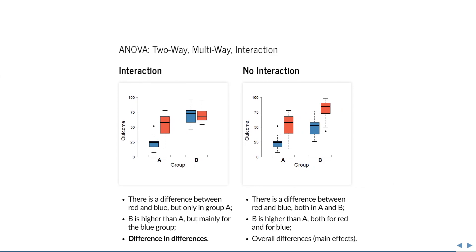Here is a visual representation of what it means for there to be an interaction. On the left, there is a clear difference between the red and blue group for those in category A, but not for those in category B — in other words, there is a difference in differences, and that is what interaction means in ANOVA. On the right we don't see this: A is on average lower than B, and blue is on average lower than red, but the difference between categories is the same in either category of the other variable. These overall effects are usually called main effects.